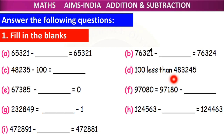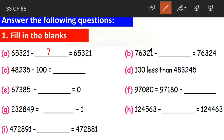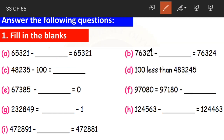Let us subtract some numbers and fill in the blanks. Question A: 65,321 minus dash equals 65,321. We have subtracted something but the difference is the same as the minuend — there is no change. So what was subtracted? Zero. When we subtract 0 from a number, the difference is the number itself.